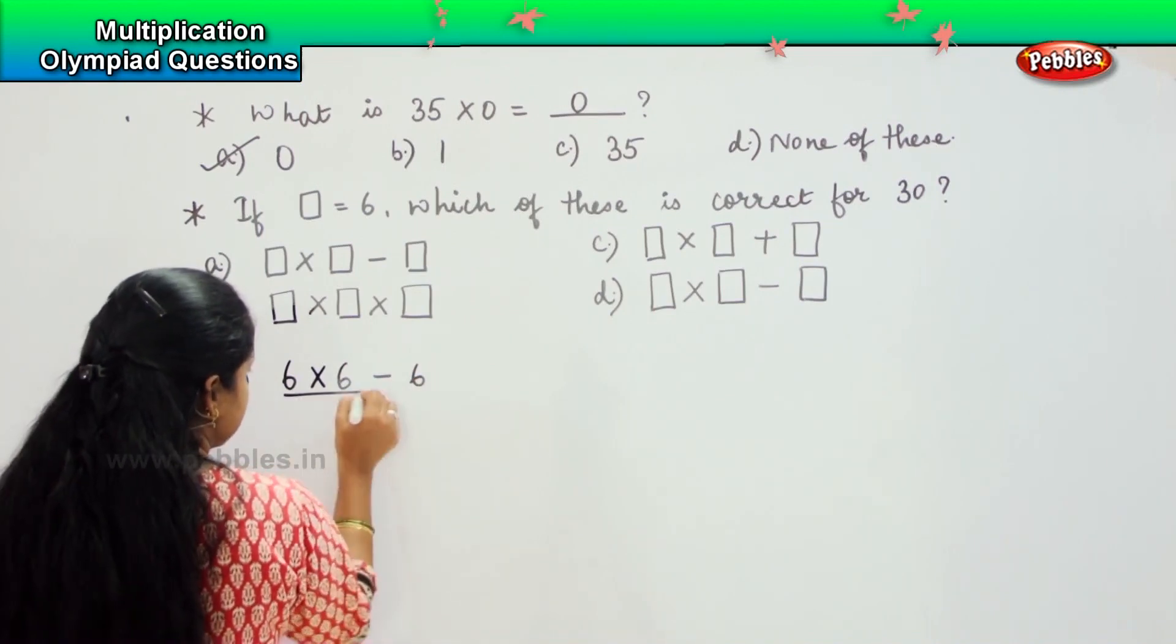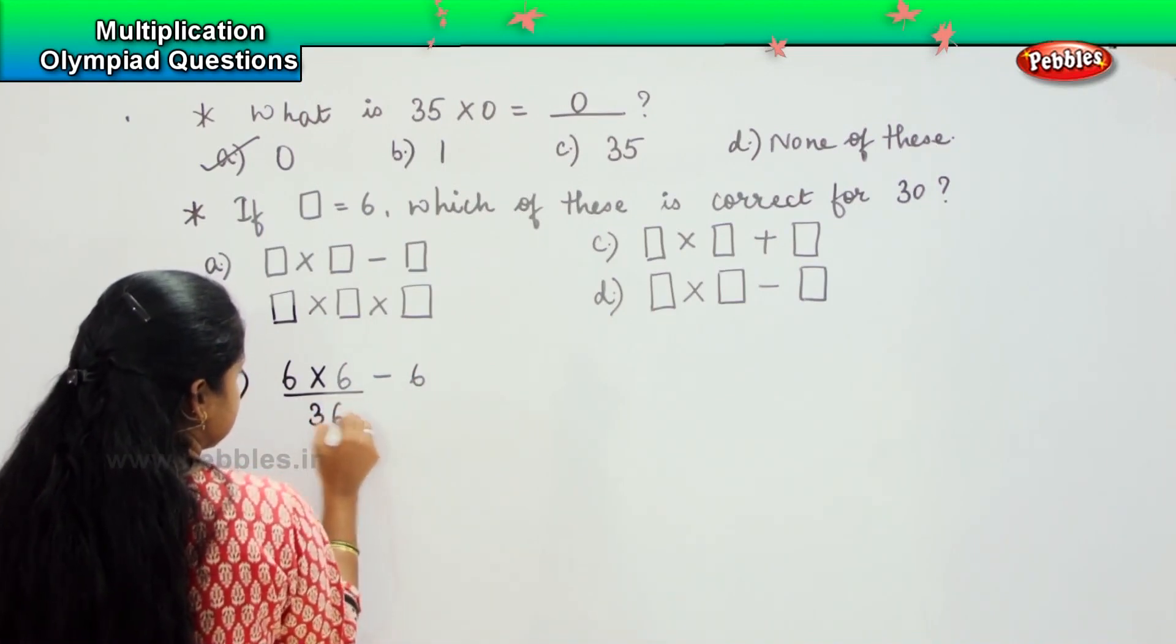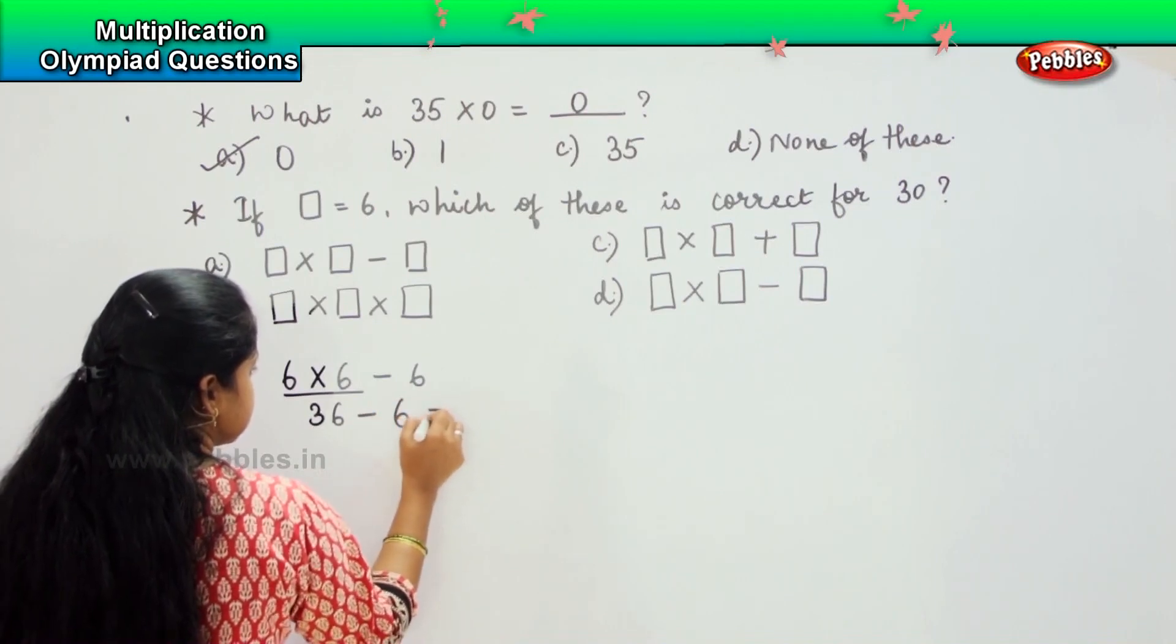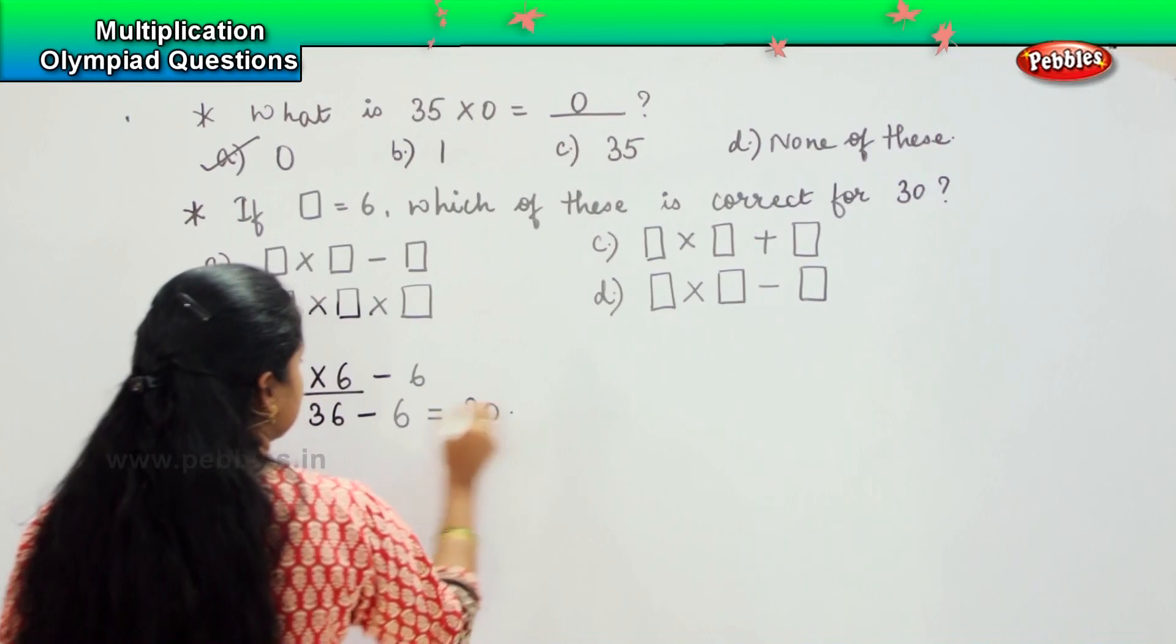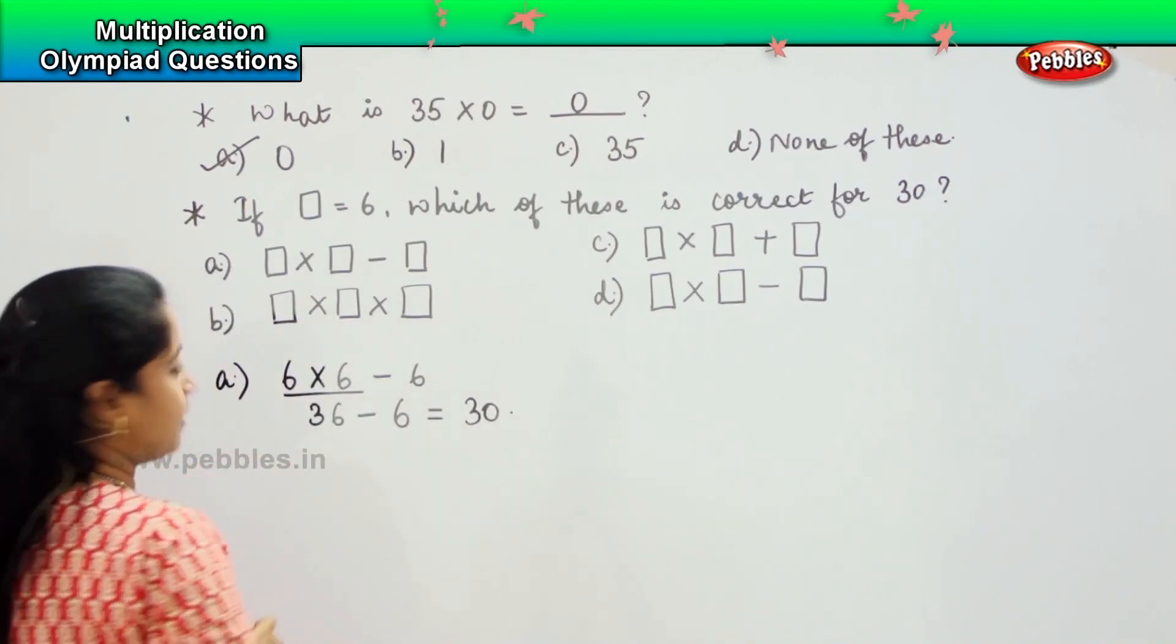What is 6 into 6? It is 36. 36 minus 6 is how much? Very good, 30. So is it holding correct? Yes.